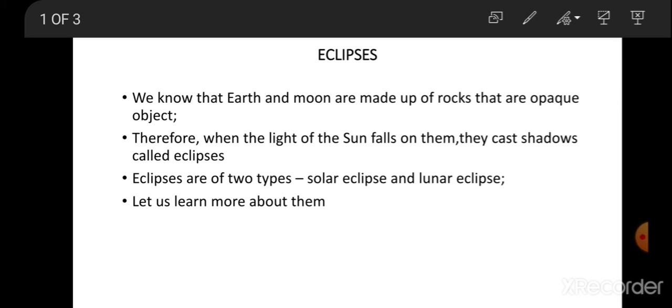Therefore, when the light of the Sun falls on them, they cast shadows called eclipses. Eclipses are of two types: solar eclipse and lunar eclipse. Let us learn more about them.